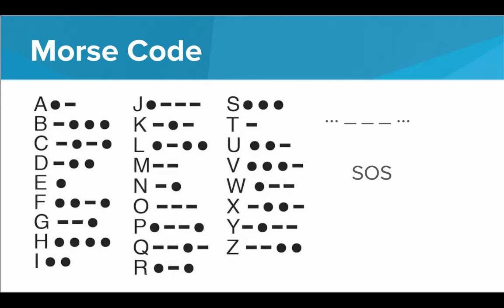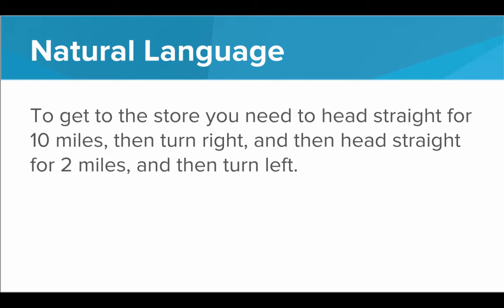But what's crazy is even this is encoding letters of the English alphabet. And those letters themselves are code. Natural language is code. It's encoding a larger idea. The idea is actually the meaningful information that I want to display, that I want to send out. And in order to get that idea out there, I use language. That is my code. So if I wanted to tell you to get to the store, I would say, oh, to get to the store, you need to head straight for 10 miles, then turn right, then head straight for two miles, and then turn left.